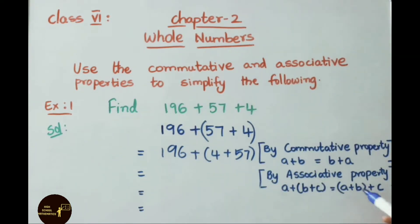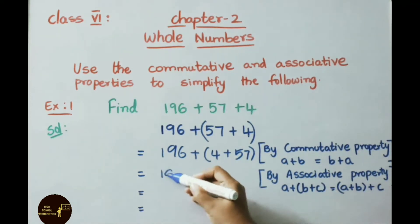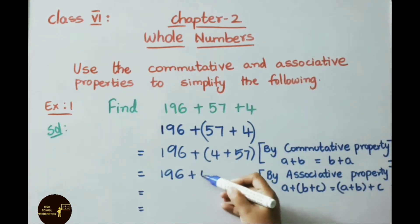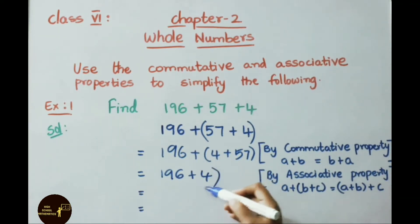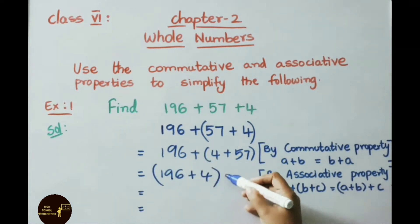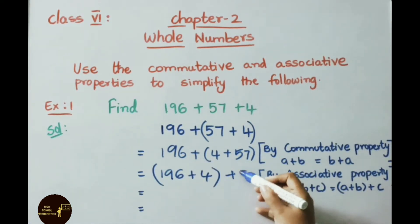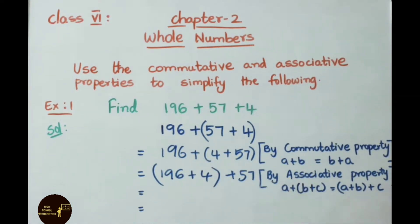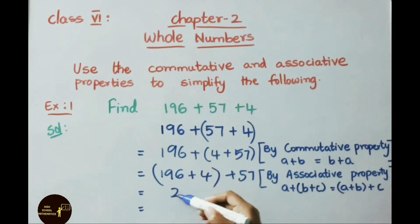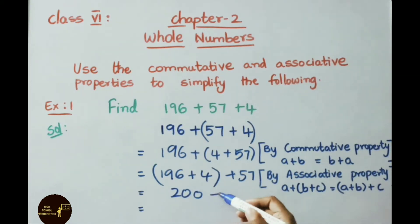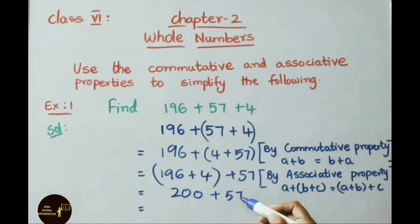Now it looks like the associative property: A plus B plus C can be written as (A plus B) plus C. That means (196 plus 4) plus 57. Now add the values in the brackets: 196 plus 4 equals 200, then 200 plus 57 gives us the answer 257.